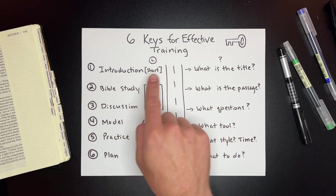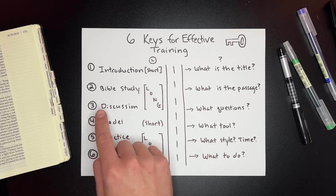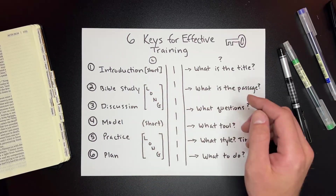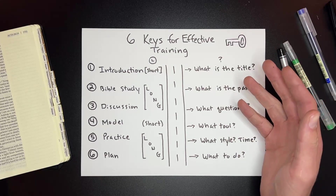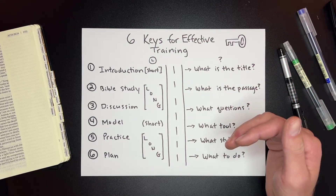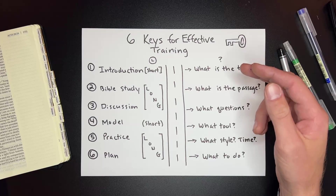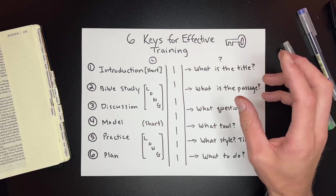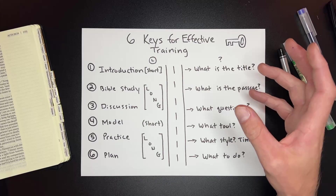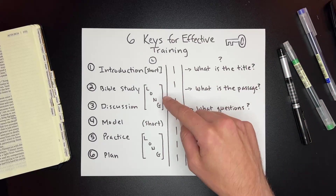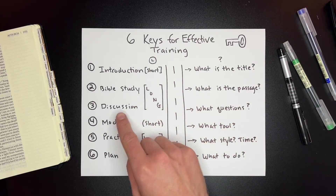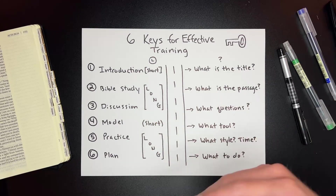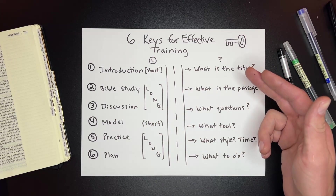So we have introduction, Bible study, and discussion. You want to give them a long time to discover. This is adult learning style — you're not just teaching people what to do. You're teaching them a new way of thinking and trying to shift a paradigm in their mind. The only way to do that is to take them to the Word and let them discuss and discover from the Bible what they are trying to learn to implement.